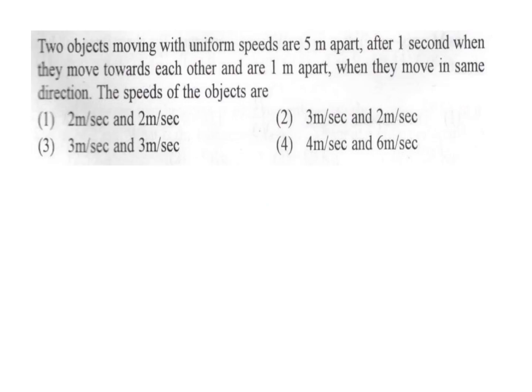Two objects moving with uniform speeds are 5 meters apart after 1 second when they move towards each other, and 1 meter apart when they move in the same direction. Let their speeds be A and B. When moving in opposite directions, the relative speed SR = SA + SB, and total distance covered is 5 meters.